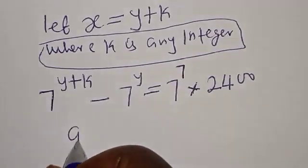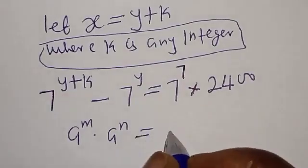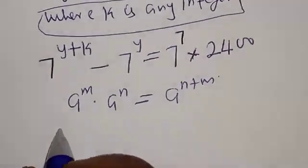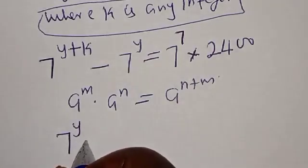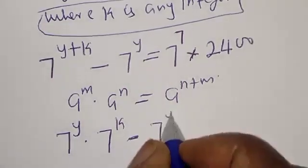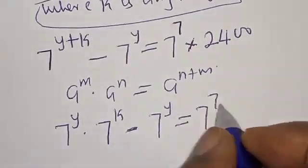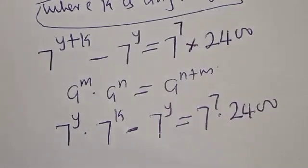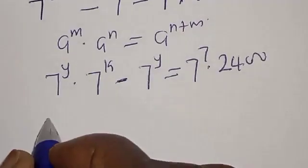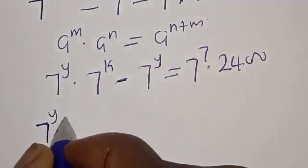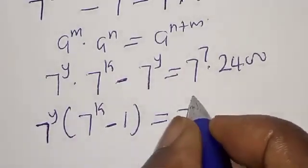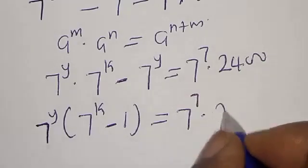Now, remember that a raised to power m multiplied by a raised to power n is the same as a raised to power n plus m. So this expression becomes 7 raised to power y multiplied by 7 raised to power k, minus 7 raised to power y, equal to 7 raised to power 7 multiplied by 2400. Since 7 raised to power y is common, we factor it out: 7 raised to power y into 7 raised to power k minus 1, equal to 7 raised to power 7 multiplied by 2400.